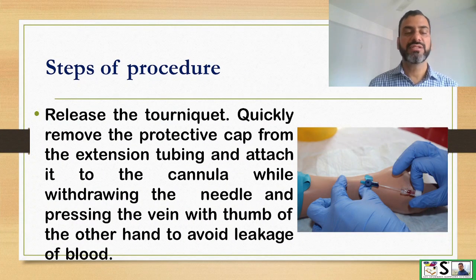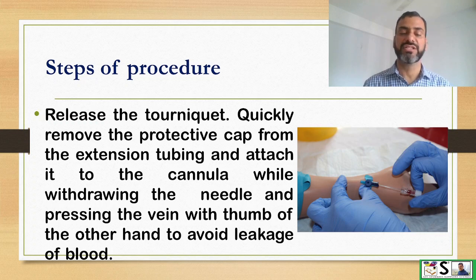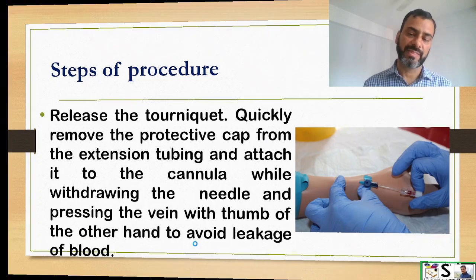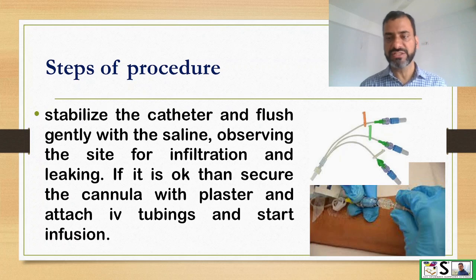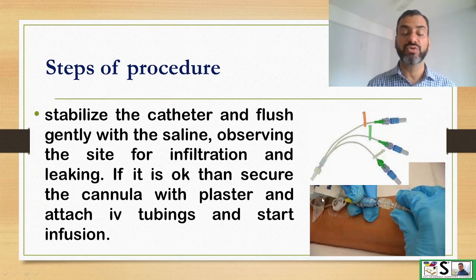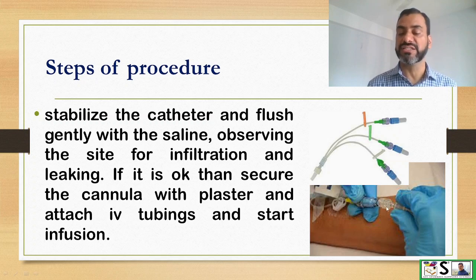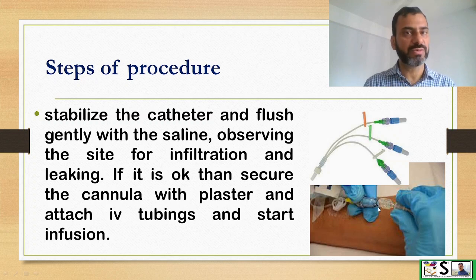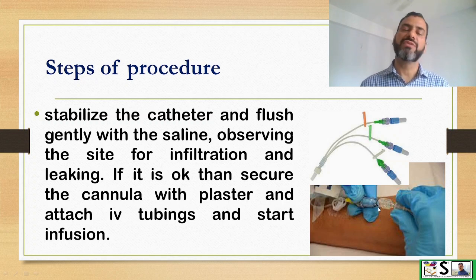Now release the tourniquet. Quickly remove the protective cap from the extension tubing and attach it to the cannula while withdrawing the needle, pressing the vein with the thumb of the other hand to avoid leakage of blood. Once the extension tubing is attached to the cannula and the IV drip set is also connected, flush with normal saline using a syringe and check for infiltration or leakage. If it is fine, attach the IV drip set and start the infusion.